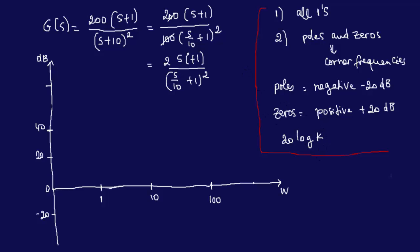K is the constant here, so here we have 2. Constant gain is 20 log of 2. We know that because we do not have a pole at the origin — we don't have s in the denominator — and we don't have s at the zeros either. So we know that our plot will start at 6 dB.